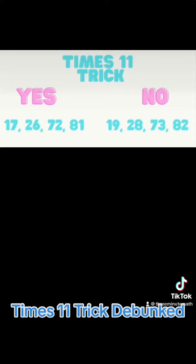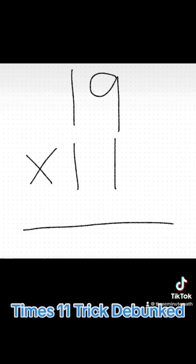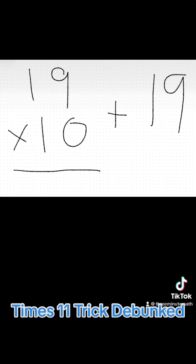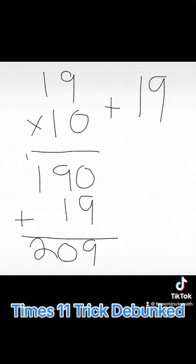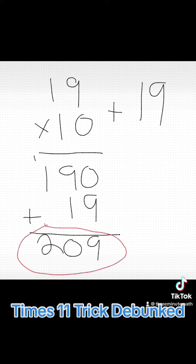Since this trick doesn't work for all numbers and only works for random numbers not even in sequential order, a better strategy could be utilized. For example, 19 times 11 can be thought of as 19 times 10, then adding on our 11th 19. So 19 times 10 gives 190, and 190 plus 19 gives us 209. You could also use the standard algorithm, an area model, or partial products — strategies that give the right answer every time with any number, rather than a trick that only works for some.